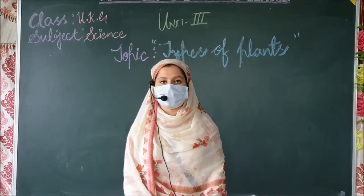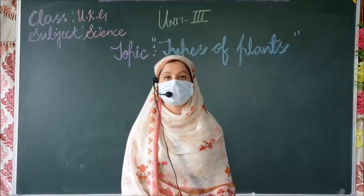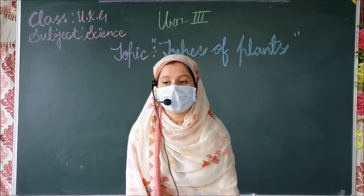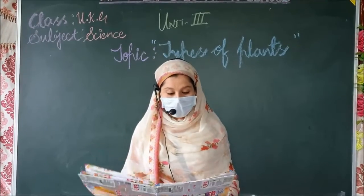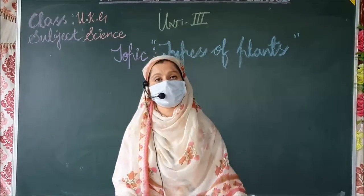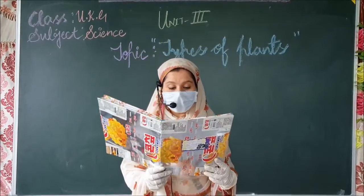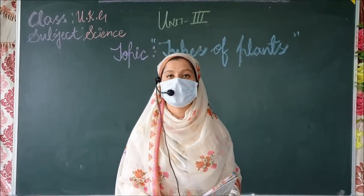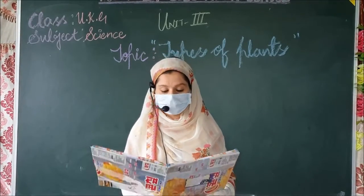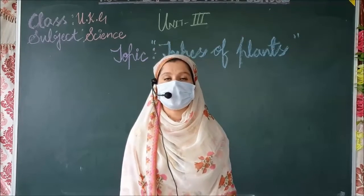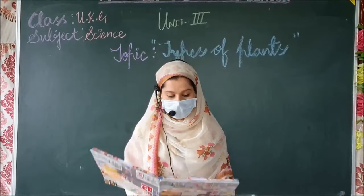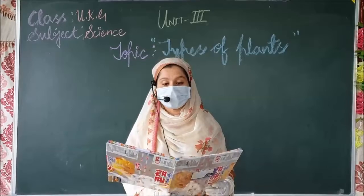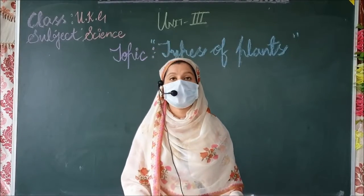सबसे अच्छी example herb की वो है grass. घास जो है वो कितनी छोटी होती है, तो grass एक herb है. Herbs होते हैं जड़ी बूटियाँ, जड़ी बूटियों को भी herbs कहते हैं — जो बहुत छोटे-छोटे plants होते हैं. जैसे कि tomato plant बहुत छोटा होता है, ऐसे ही sunflower plant भी बहुत छोटा होता है. So we call them herbs.